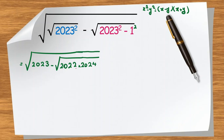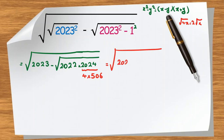Now we want to simplify 2022 times 2024 further. Since 2024 is a multiple of 4, we can write it as 4 times 506. We can take the 4 outside the square root — for example, the square root of 4x equals 2 times the square root of x — so this becomes 2 times the square root of 2022 times 506.